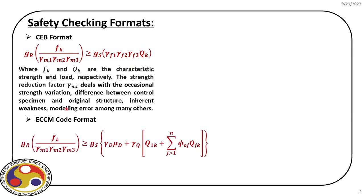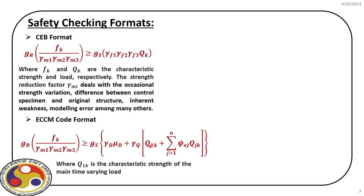Then there is the ECCM — European Code Committee — format. In this format the left hand side remains the same; however, on the right hand side the dead load effect is separated out from all other loads, and we consider mean dead load multiplied with the associated factor. Then we have γ_Q, the combined factor for all time-varying loads. The dominant time-varying load Qₖ₁ is separated out from all other time-varying loads, which are combined in a summation. All of them are multiplied by γ_Q and added with the dead load effect.